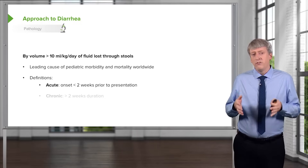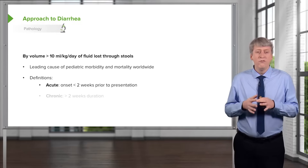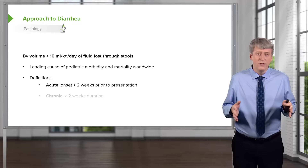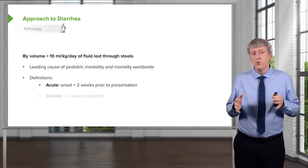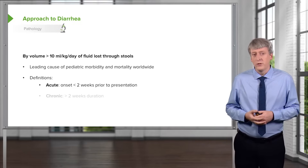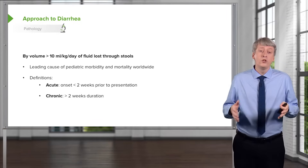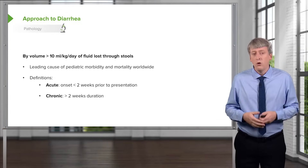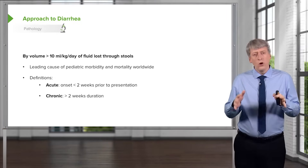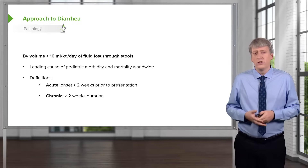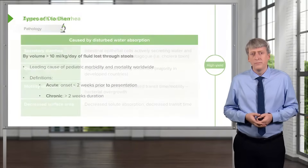Generally, we will define diarrhea as acute or chronic. The vast majority of diarrhea is acute and it is less than two weeks prior to presentation. If a patient has more than two weeks of duration of diarrhea, we will call that chronic, and we'll go through in a bit what the differences are in terms of etiologies of these various types of problems.